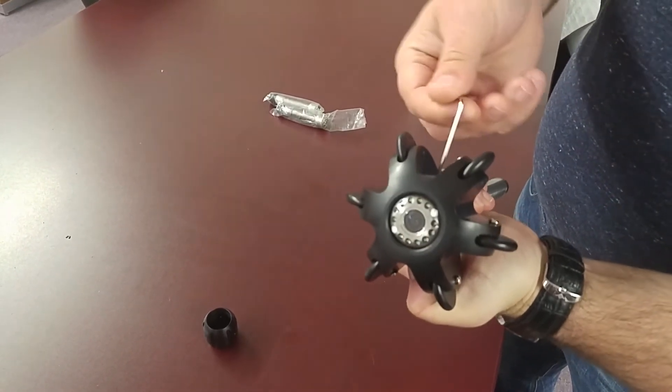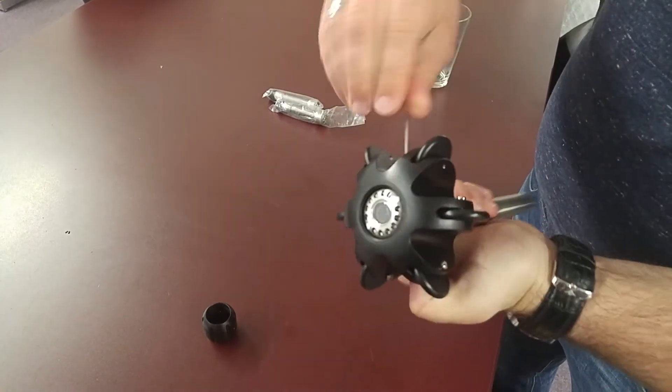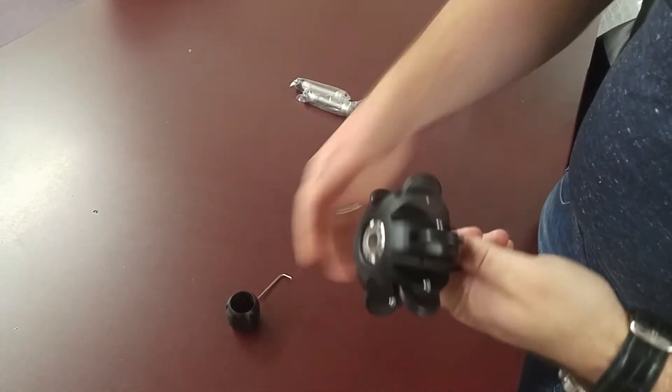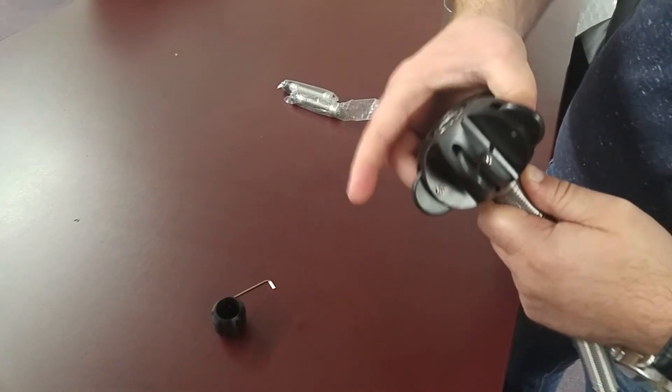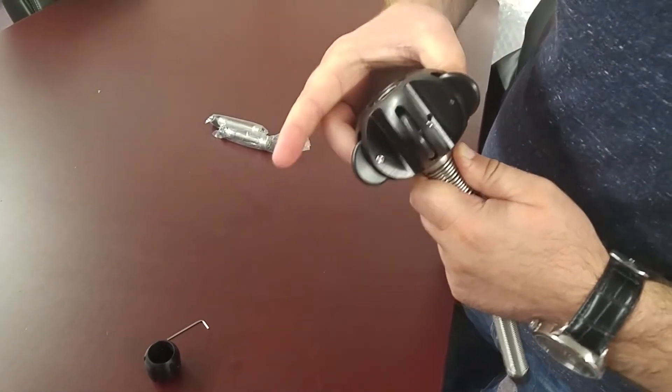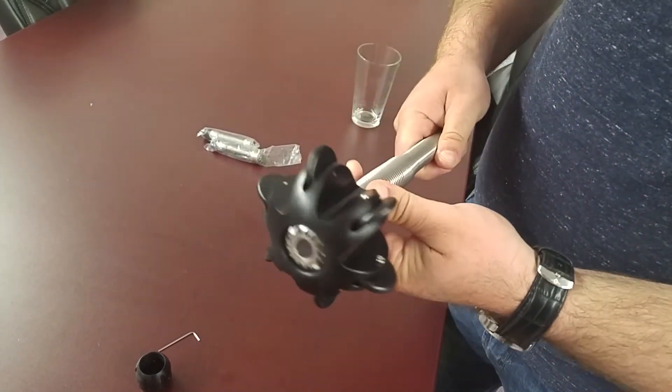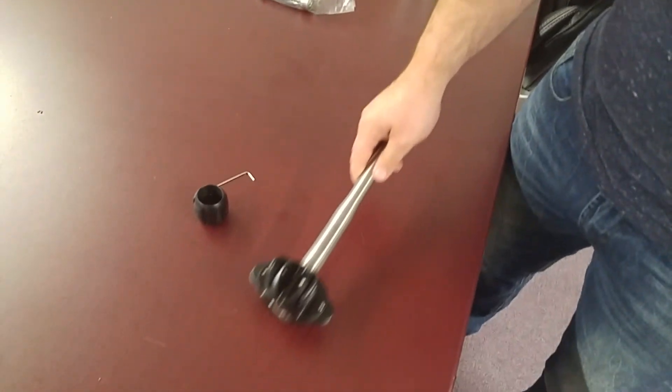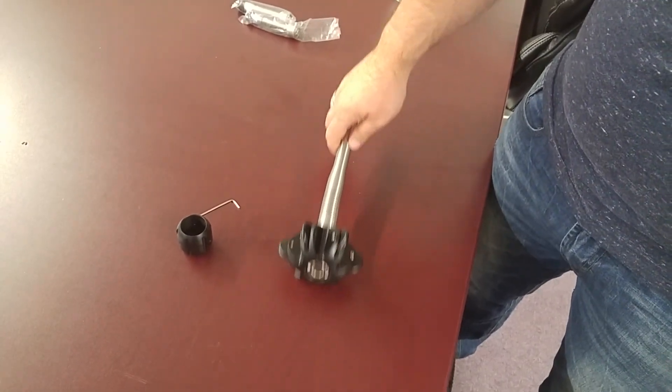Once you tighten this down, give it a couple turns and then this should be solid on so that it's not really going to pop off. You want to make sure that you have that solid connection so that when you're pushing it through the pipe you're not going to have issues and it'll just roll through the areas that you're using it in.